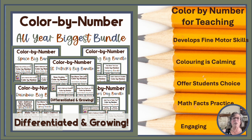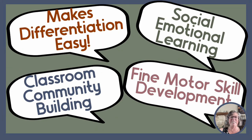As you can see from the list on the right, Colour By Number is a fantastic activity and it is a part of any strong math program in primary. Here are some of the reasons why, especially with a big bundle like this where there are so many themes and all the mental math strategies are included. Differentiation is made easy, it supports social-emotional learning because colouring is one of the strategies that we teach kids for calming themselves. It's great for classroom community building and fine motor skill development.